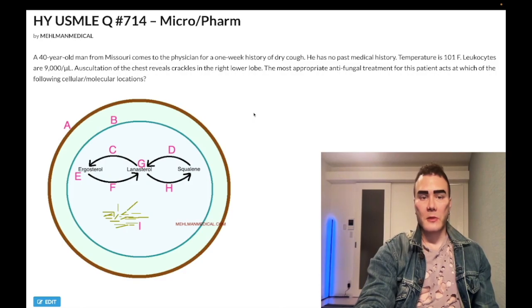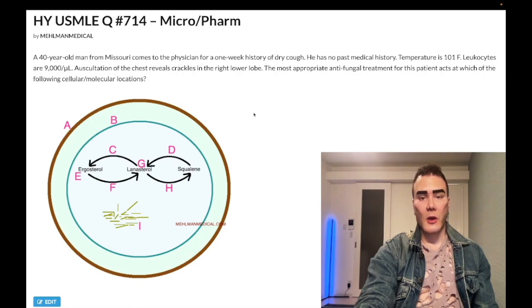Start the question. 40-year-old man from Missouri comes to physician with one-week history of dry cough. No past medical history. Febrile 101 Fahrenheit. Leukocytes 9,000 per microliter, normal range 4 to 11,000. Auscultation of the chest reveals crackles in the right lower lobe.